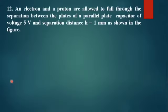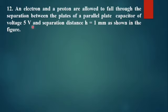An electron and a proton are allowed to fall through the separation between the plates of a parallel plate capacitor of voltage 5V, and the separation distance h is equal to 1 mm, as shown in the figure.